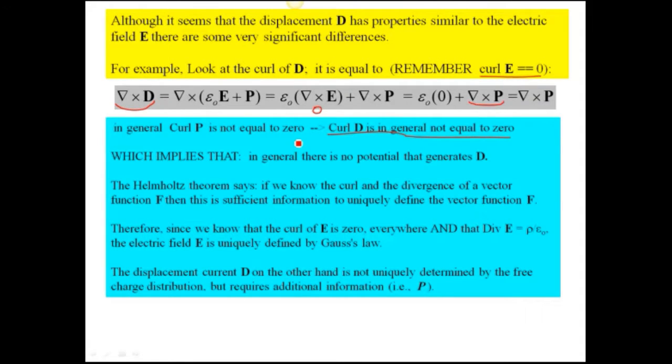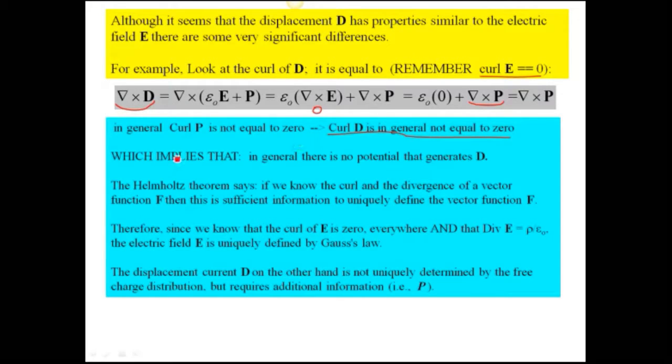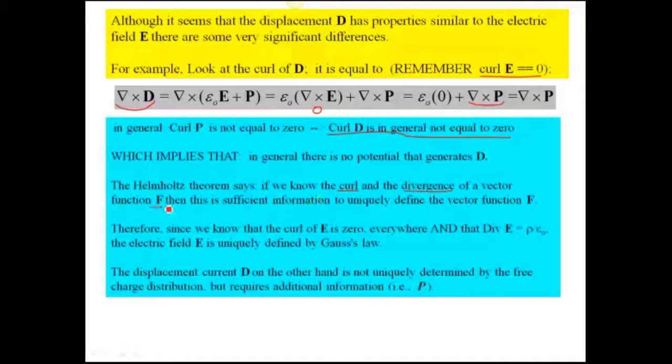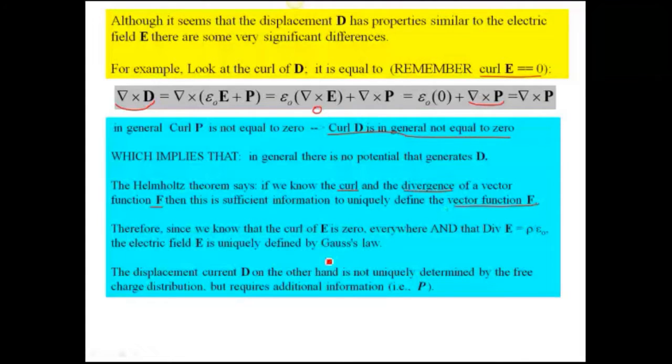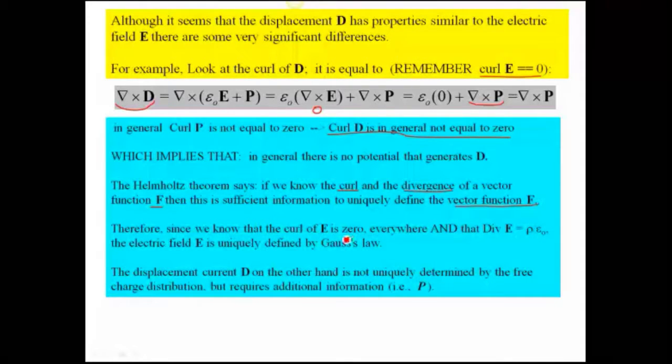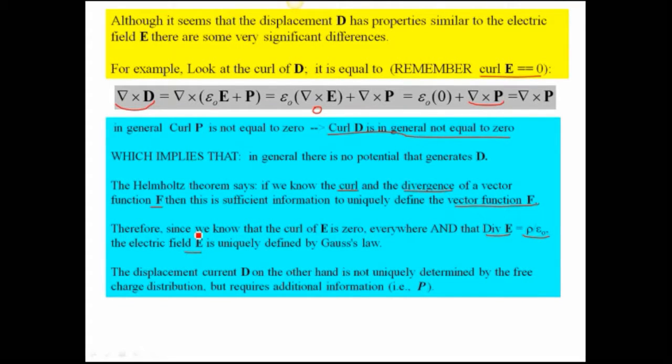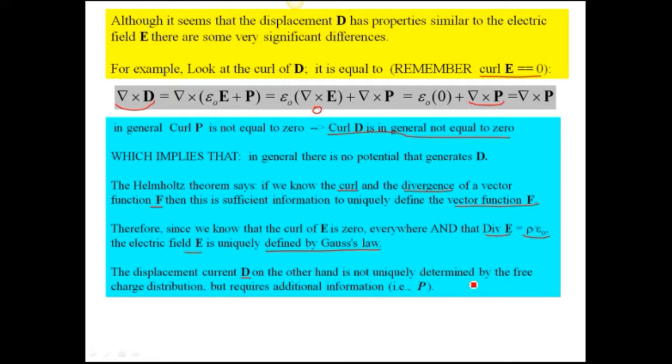Remember that if we had a curl of E equal to zero, we could find a potential. If you remember the Helmholtz theorem says, if we know the curl and the divergence of a vector, say F, the vector F, then that's sufficient information to uniquely define the vector function F. And if we go back to E, since we know the curl of E is equal to zero everywhere, and we know the divergence of E is equal to rho over epsilon naught, then we have sufficient information to say that the vector function E is uniquely determined, and we can use, therefore, Gauss's law.